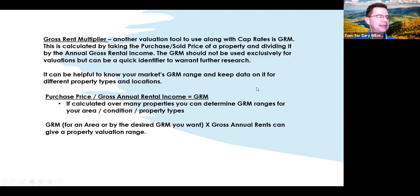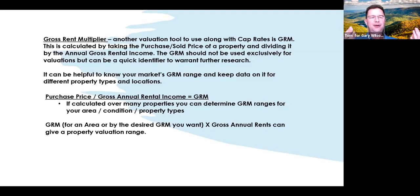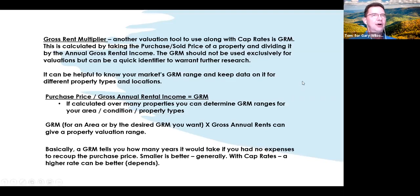The gross rent for an area times your gross annual rent can give a property valuation range. If you've already created your GRM for your market for duplexes or triplexes and you know it's 10 to 12, and you know annual rents are $30,000 a year for comparable properties, then a property valuation is going to be in the neighborhood of $300,000 to $360,000 — that's just using the 10-to-12 GRM range you've determined from prior sales.